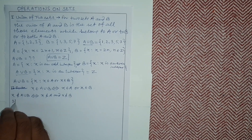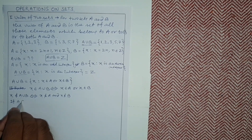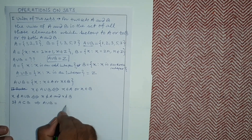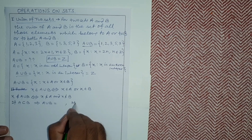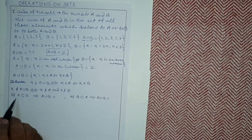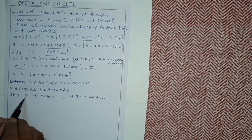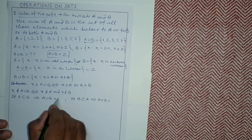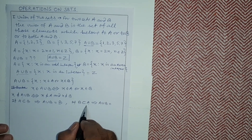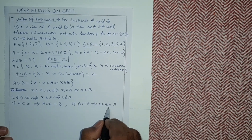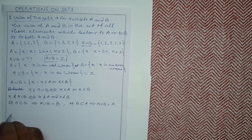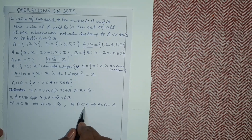Third result: if A is a subset of B, then A union B equals B — because all elements of A are already in B, so combining gives only B. Similarly, if B is a subset of A, then A union B equals A — because all elements of B are already in A, so combining gives only A.